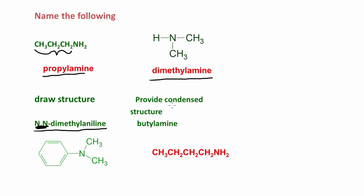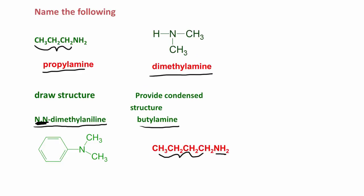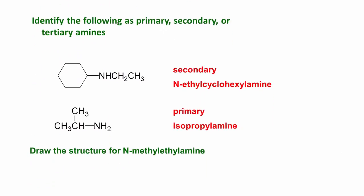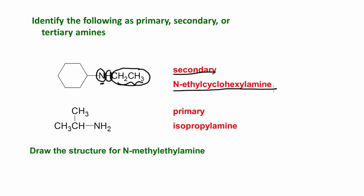Here they want us to provide the condensed structure for butylamine. Butylamine is a primary amine — we have the amino group here and then the four-carbon chain, which is the butyl group. Now identify the following as primary, secondary, or tertiary amines. Looking at the nitrogen here — it's bonded to a hydrogen and this ethyl group. This is a secondary amine and this is called N-ethylcyclohexylamine. This would be a cyclohexane, so this would be a cyclohexylamine, and on the nitrogen we have an ethyl group: N-ethylcyclohexylamine.